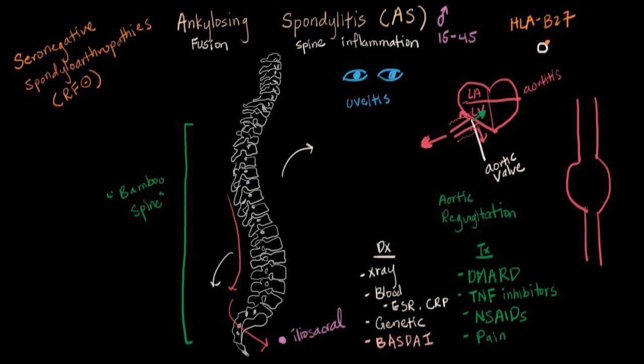Remember that AS can be similar to rheumatoid arthritis in terms of affecting the whole body with a lot of inflammation. But the fact that it fuses and specifically affects the spine, the eyes, and the heart, and the fact that it does not have rheumatoid factor, makes it different.